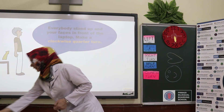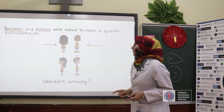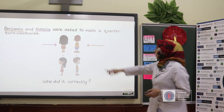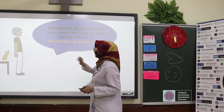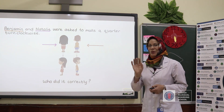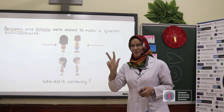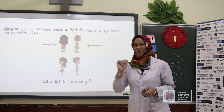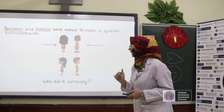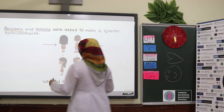Let's look at another example. Benjamin and Natalie were asked to make a quarter turn clockwise. This is Benjamin and this is Natalie. Who did it correctly? You have five seconds. Excellent! Benjamin did it correctly — Benjamin turns to the right side, clockwise.